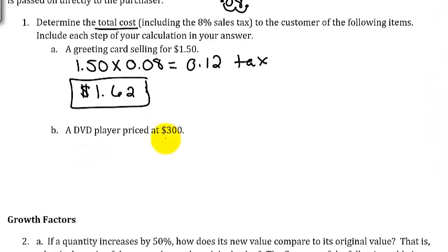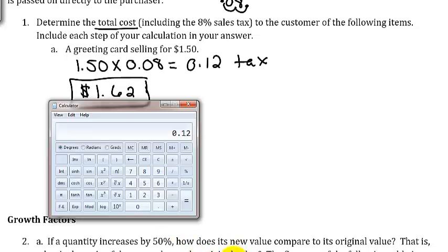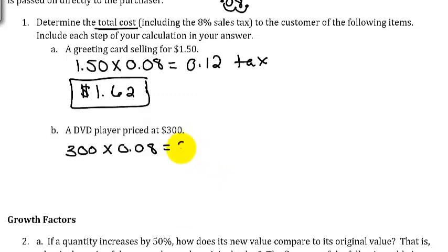The next item is a DVD player that costs $300. We do the same thing: take the cost of the DVD player and multiply that by 0.08. This gives us our tax of $24. Adding the $24 to the $300 gives us a total cost of $324.